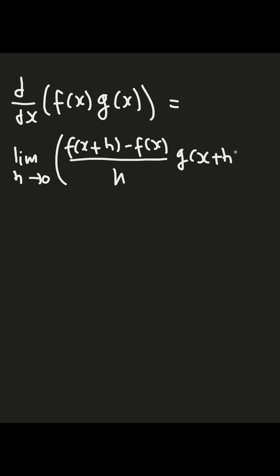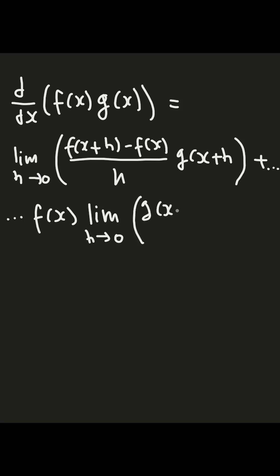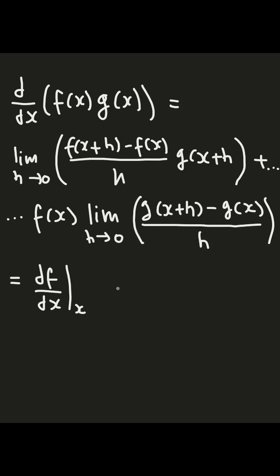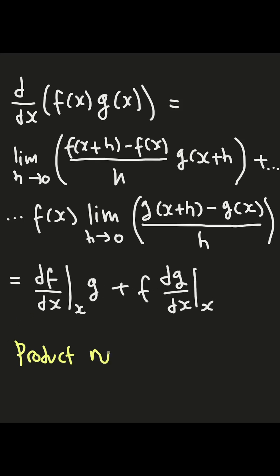Finally, summarizing all terms, we have the result: df/dx at x multiplied by g, plus f multiplied by dg/dx at x. This is known as the product rule of differentiation.